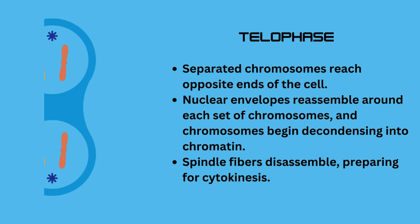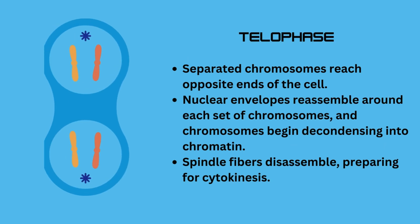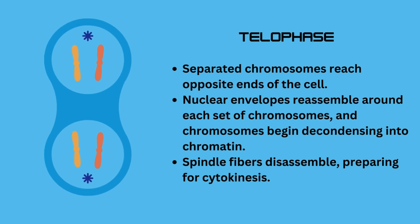Telophase. Separated chromosomes reach opposite ends of the cell. Nuclear envelopes reassemble around each set of chromosomes, and chromosomes begin decondensing into chromatin. Spindle fibers disassemble, preparing for the next phase, cytokinesis.